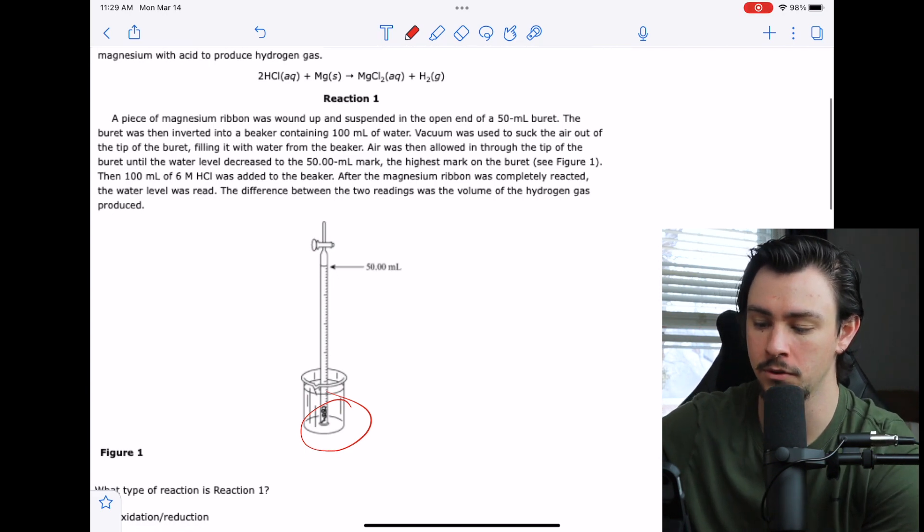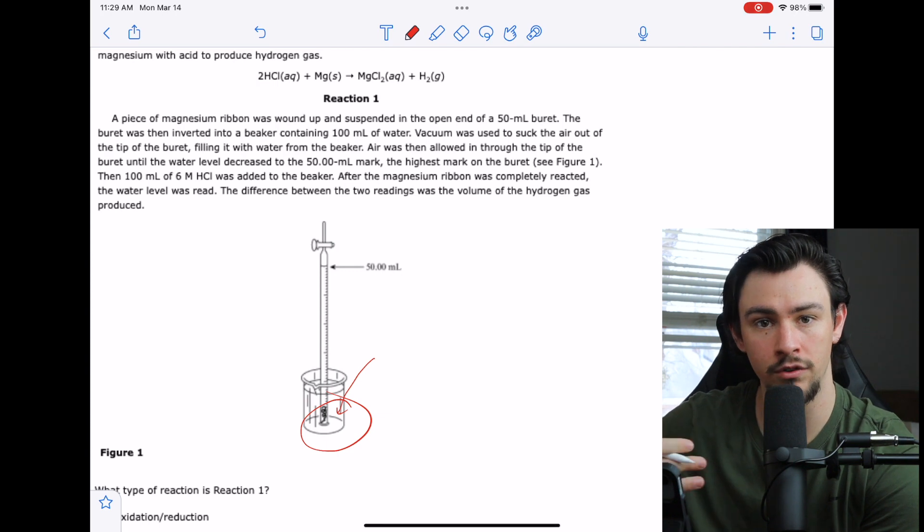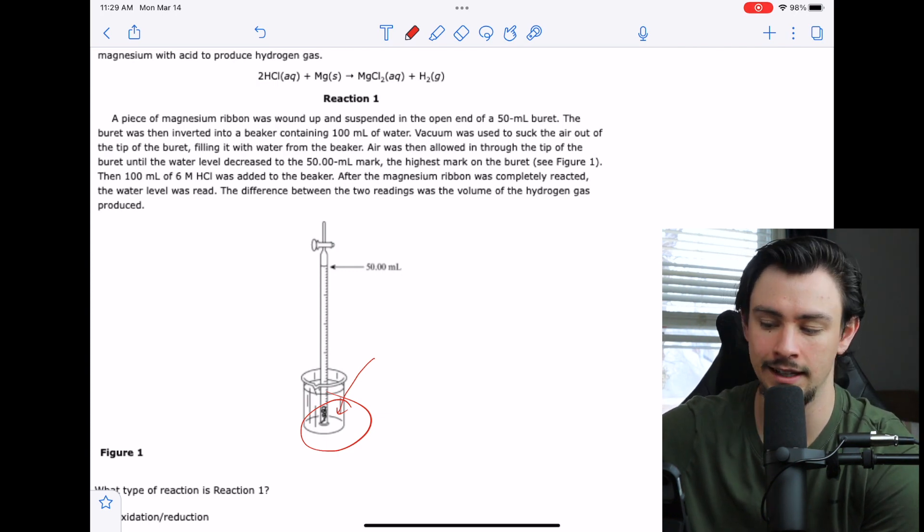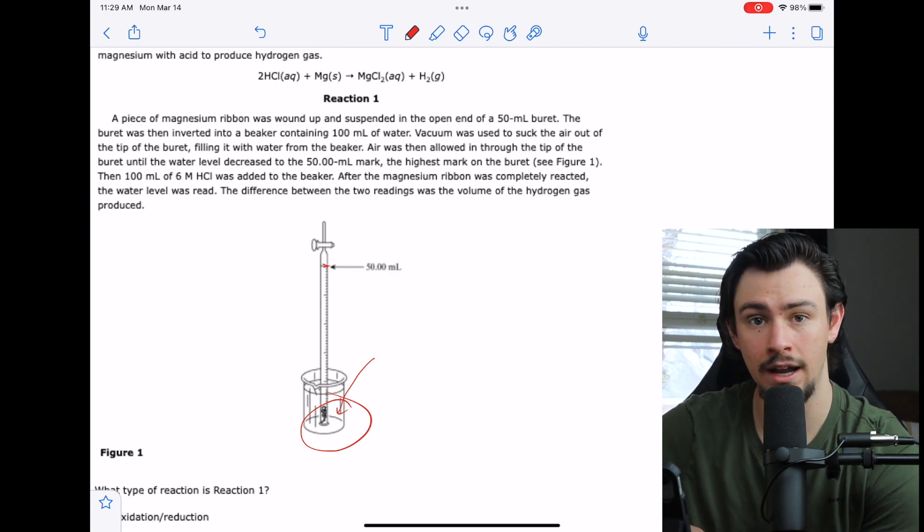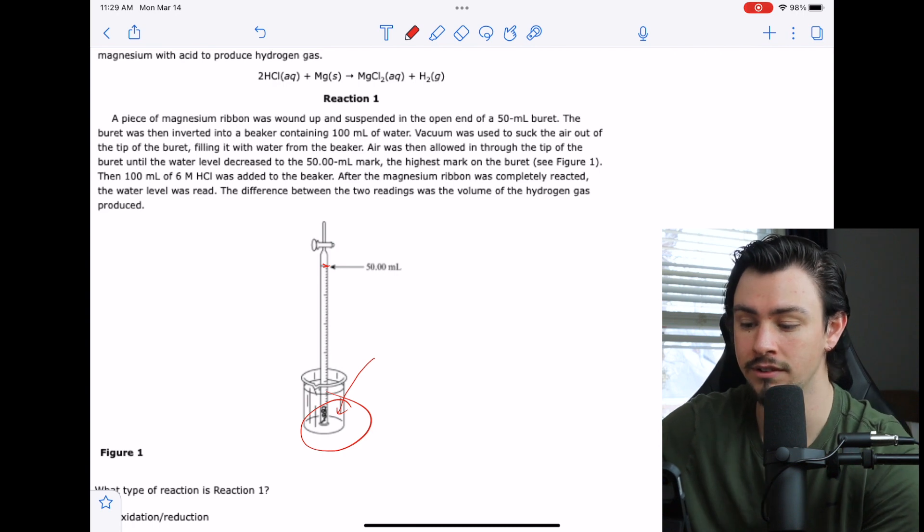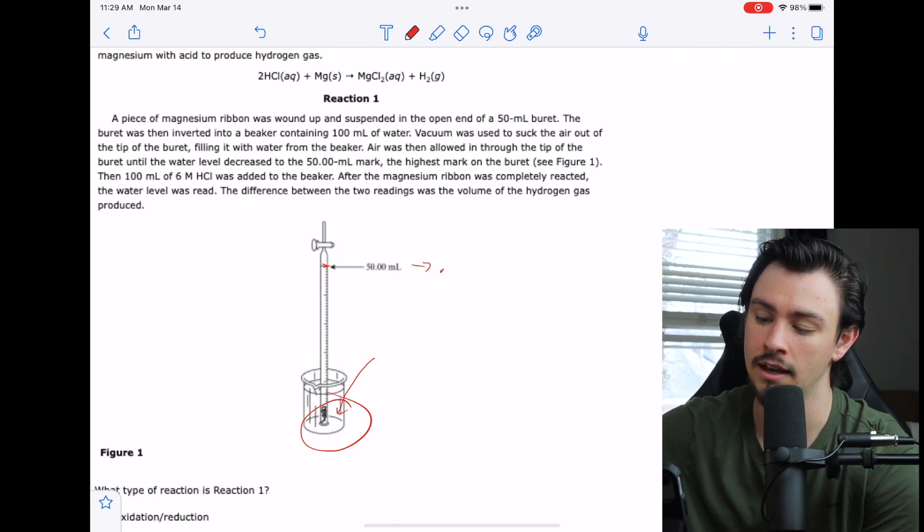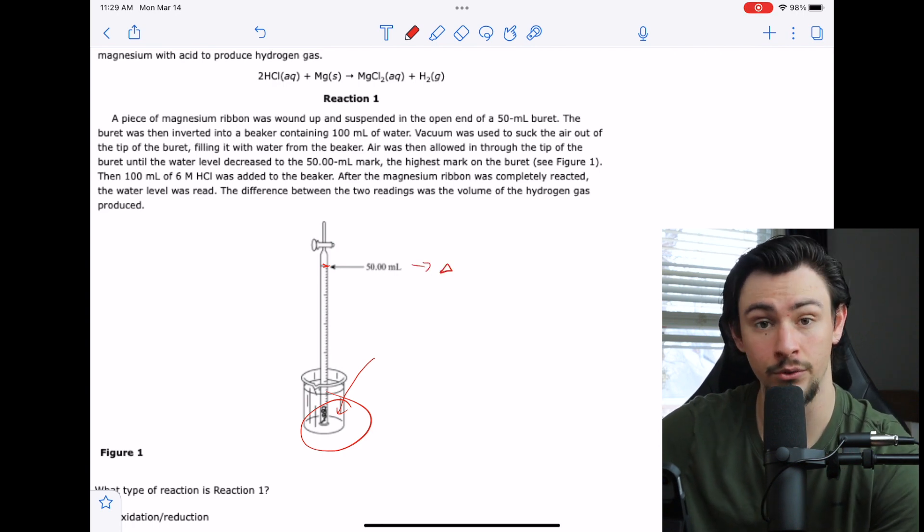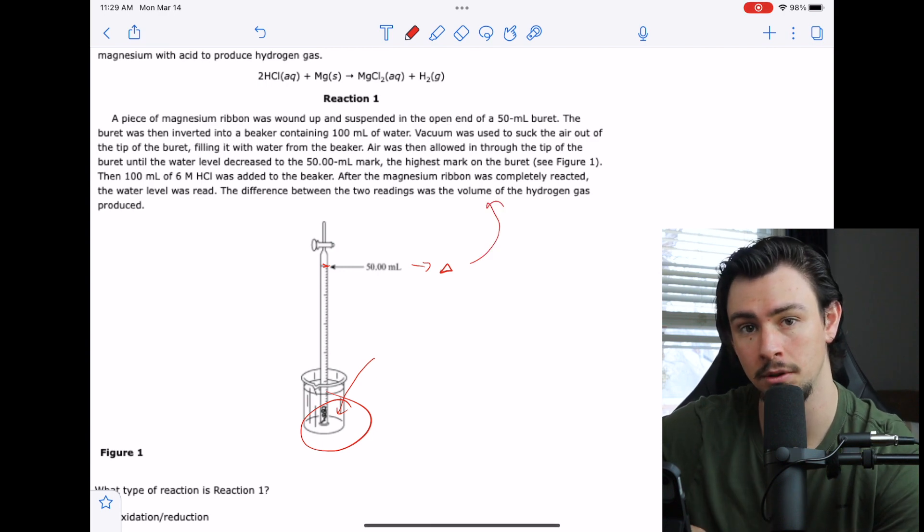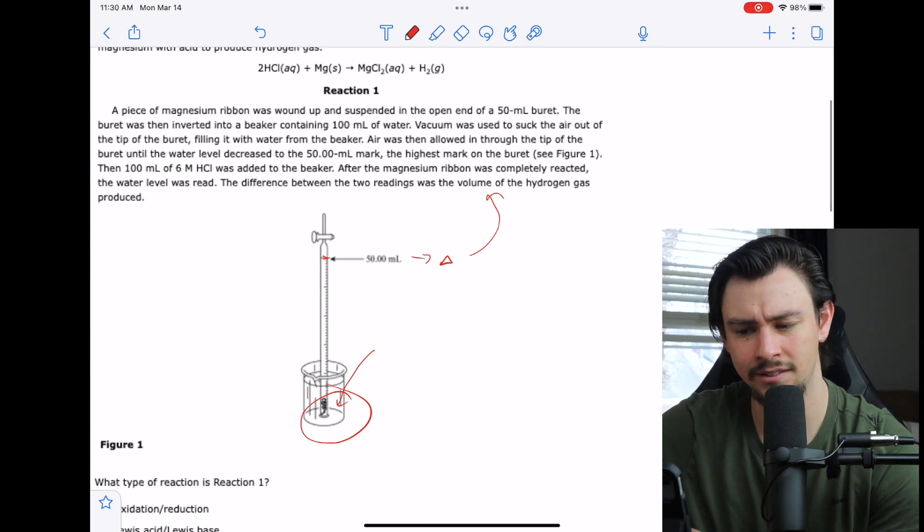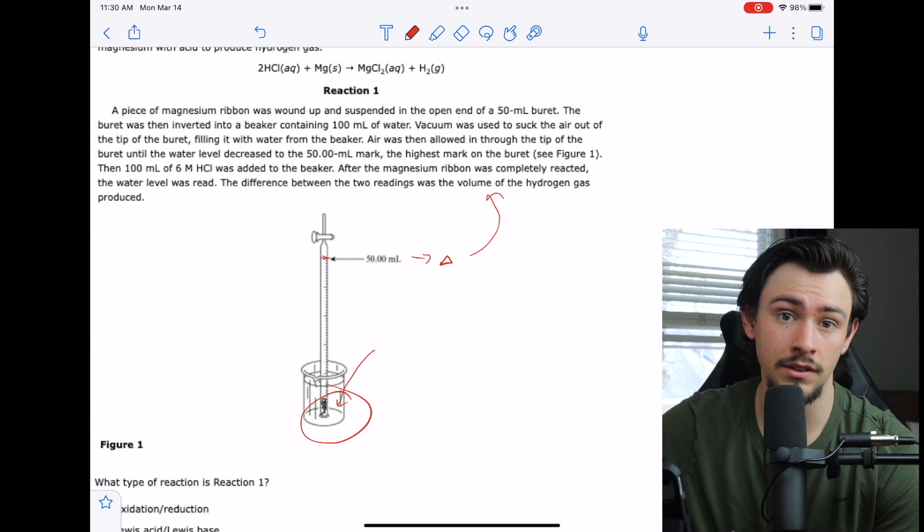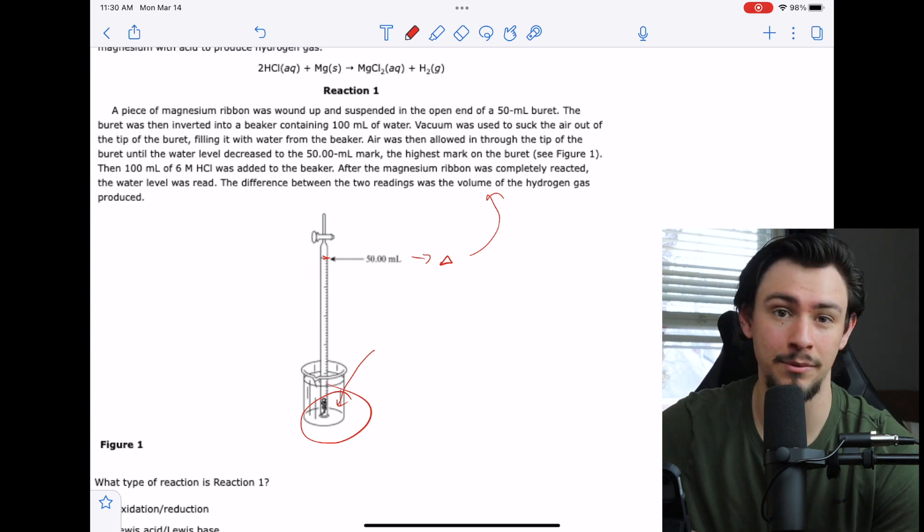So what they did is they just put this burette with this ribbon into a beaker filled with water and then they sucked all the air and the additional particles out of it, letting it out to 50 milliliters. Then they added 100 mils of hydrochloric acid and they said that if we notice a difference between 50 mils and whatever happens after the reaction, that difference is due to the volume of the hydrogen gas being produced. So we can use all of this to approximate the ideal gas constant. And that's it. That's a really quick passage. It really tells us a ton, but let's look at these questions and see just how in depth they get.